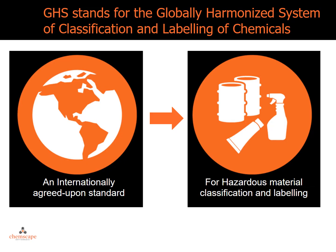GHS stands for the Globally Harmonized System of Classification and Labeling of Chemicals. It is an internationally agreed-upon standard managed by the United Nations for hazardous material classification and labeling used around the world.